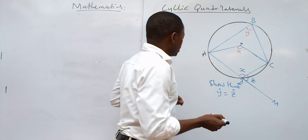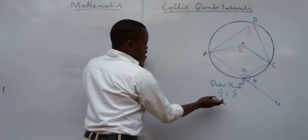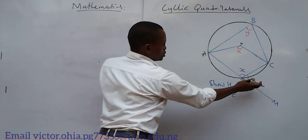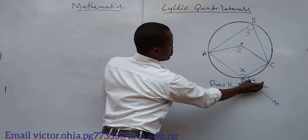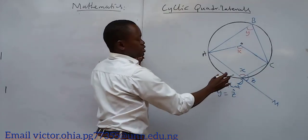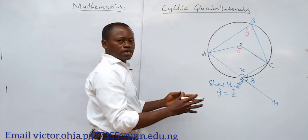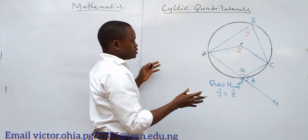So quickly, we want to show that this y is equal to this z. The external angle of a cyclic quadrilateral. This is a cyclic quadrilateral—that is, a four-sided figure inscribed in a circle.